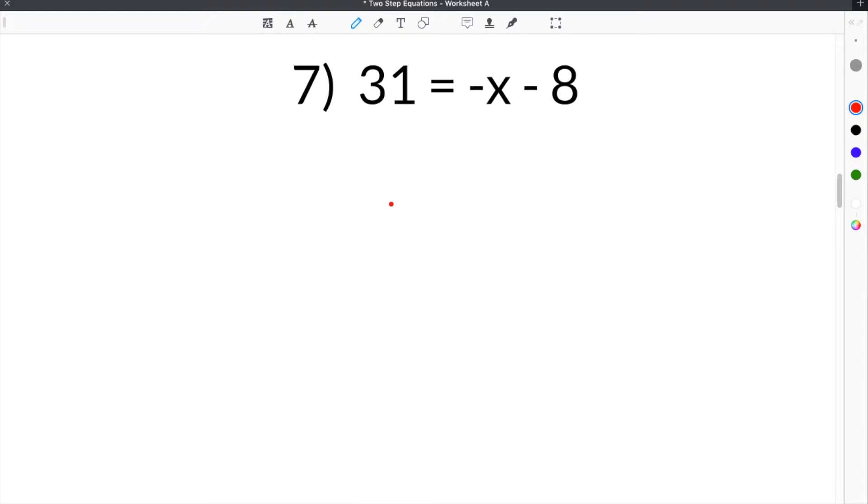The last example we're going to go over on our two-step equations worksheet is number 7, which is 31 equals negative x minus 8. So our first step is we have to get rid of this negative 8 because it's on the same side as the variable, and we need to get all the constants on the same side together. So the opposite of negative 8, or subtract 8, is to add 8. So we're going to add 8 to both sides. These will cancel. We're left with 39 equals negative x.